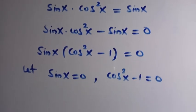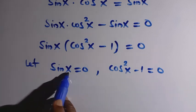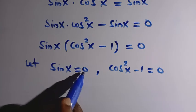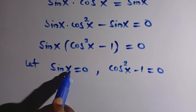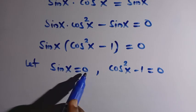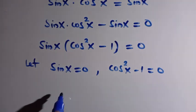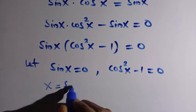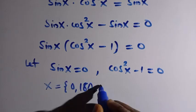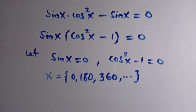For the first case, sine x equals zero. We look for all values of x that make this true, since x can take different values. For example, sine of 0 equals 0, sine of 180 equals 0, and sine of 360 equals 0. These are all valid values of x, and the pattern continues.